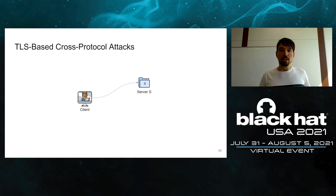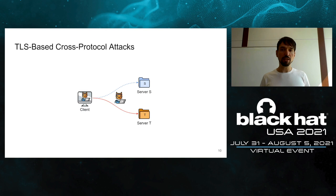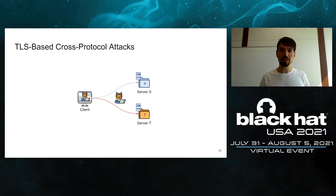The general attack works as follows: a client wants to establish a TLS channel to an intended server S. A man-in-the-middle attacker controls the channel — for example, by triggering a GET request using JavaScript — and redirects the connection to a substitute server T. If the certificates of T and S are compatible, the connection is established, allowing the attacker to exploit unexpected behavior in server T to subvert the application security of server S.